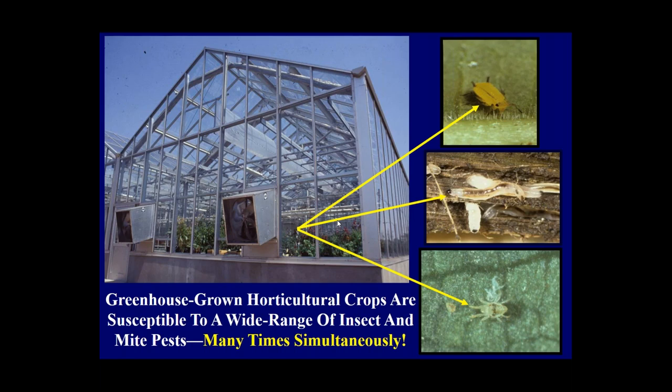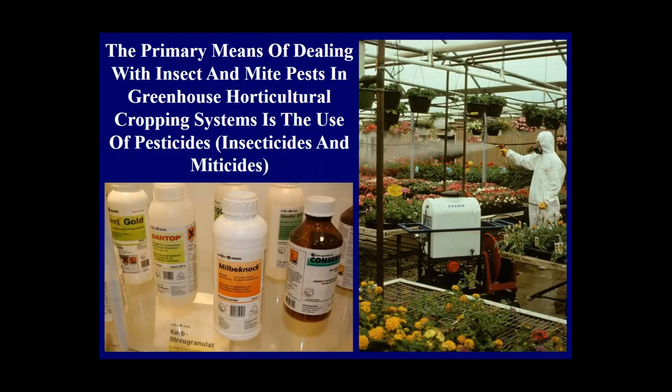In greenhouse production systems growing horticultural crops, many crops are susceptible to a wide range of insect and mite pests such as aphids, fungus gnat larvae, and spider mites — and many times simultaneously, dealing with two or possibly three pests at once. The major way to deal with these pests is the use of pesticides — specifically insecticides and miticides.